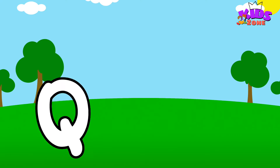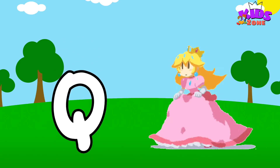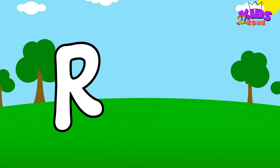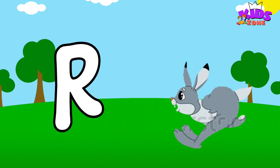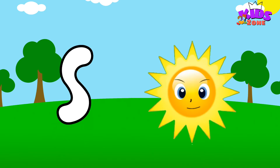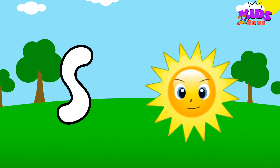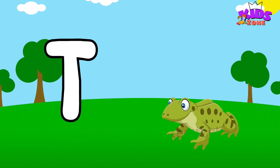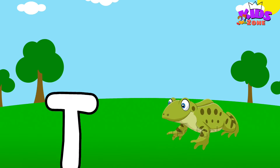Q is for Queen. Q-Q-Queen. R is for Rabbit. R-R-R-Rabbit. S is for Sun. S-S-Sun. T is for Toad. T-T-Toad.